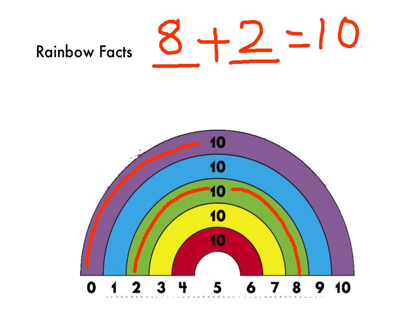We've got 0 and 10, they go together to make 10. 1 and 9 go together, and 3 and 7 go together. And of course 4 and 6 go together to make 10. Those are your rainbow facts.